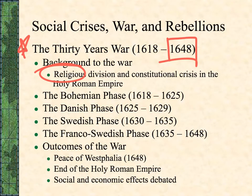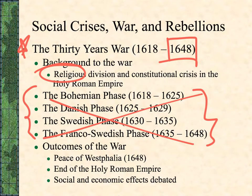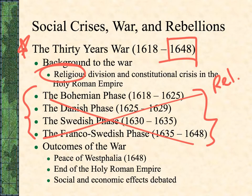The war goes through basically four phases. While it makes for a very interesting story, is extremely destructive, and is very important in the course of European history, AP Euro does not require you to know anything about any of the phases other than they happened. There is one thing to point out: in the beginning, this is a religious war, and as time goes on, the religious lines blur.